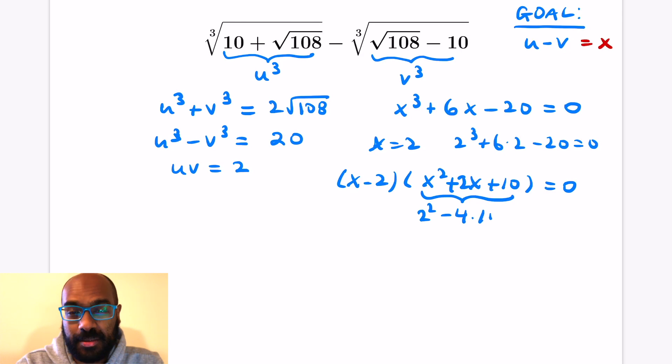Now the thing with this quadratic that remains is that it has no real solutions. Its discriminant, the b squared minus 4ac part, is actually negative. So that means the solutions are all complex, non-real numbers. So this has no real roots.